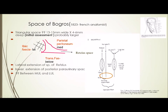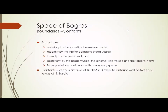Posteriorly, the space of Bogros extends with the psoas muscle, and via the combined fascia of Zuckerkandl, it extends posteriorly. It extends medially combining with the Retzius space, and laterally along the abdominal wall. Boundaries: anteriorly/superficially - the transversalis fascia; medially - the inferior epigastric blood vessels; laterally - the pelvic wall. Posteriorly it joins the fascia of the psoas muscle, external iliac vessels, femoral nerve, and more posteriorly continues to the parietal peritoneum.